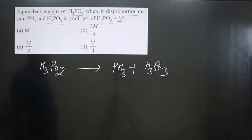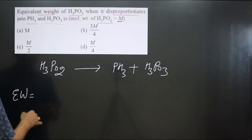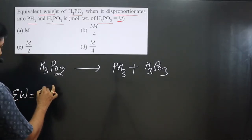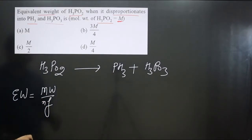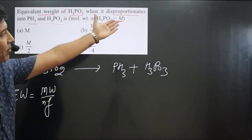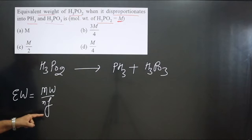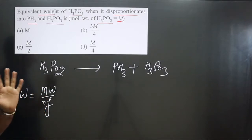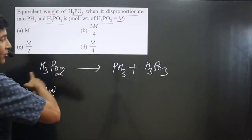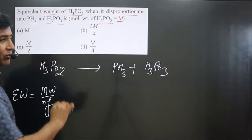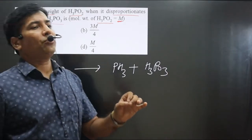We need to calculate the equivalent weight of H3PO2. The formula is: equivalent weight equals molecular weight divided by n-factor. The molecular weight M is already given in the question, so if we calculate the n-factor value, we can answer this question.